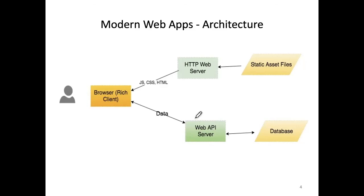The server down here we refer to as a web API server. All it's concerned with is receiving requests for data and returning that data back — typically in a format known as JSON, though it could be XML or YAML. In our case it would always be JSON. So that's the architecture of what I'm classifying as modern web apps, and I've tried to explain essentially the flow of execution for these web apps.